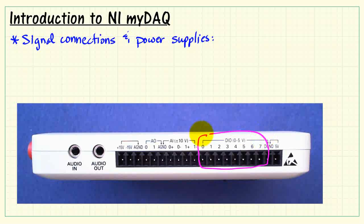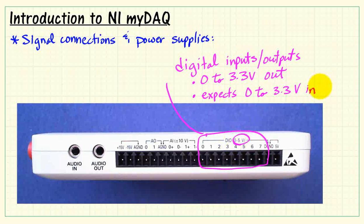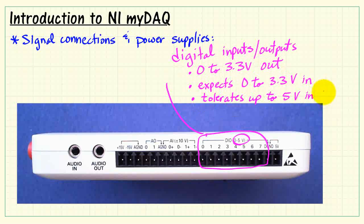We have eight digital IOs, or digital input-output connections, and these generate 0 to 3.3 volts out. The 0 and 5 means that while MIDAC expects 0 to 3.3 volts in, it can tolerate up to 5 volts for the input.